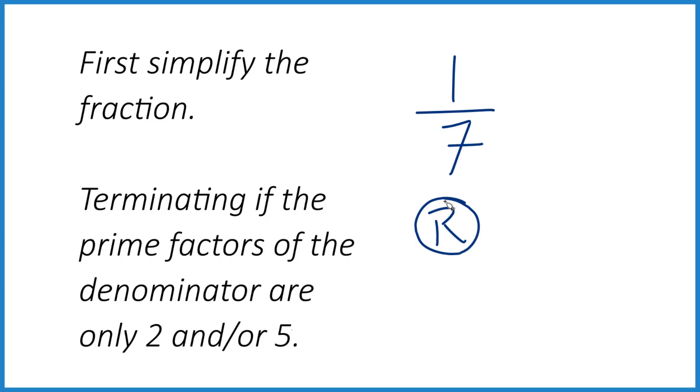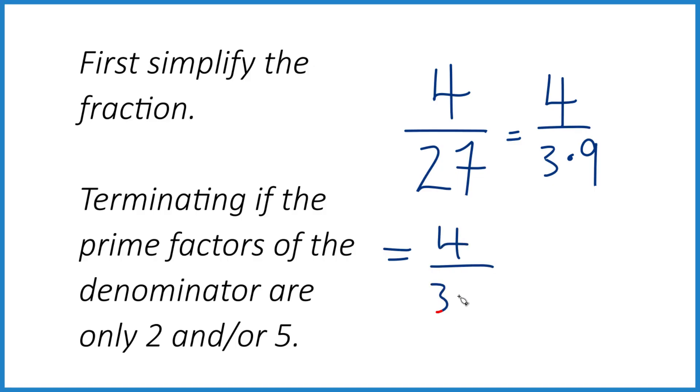Let's try another one. What do you think about this one? So we're going to look at 27. So this would equal 4 over 3 times 9. That's the same thing. We could then call it 4 over 3 times 3 times 3.